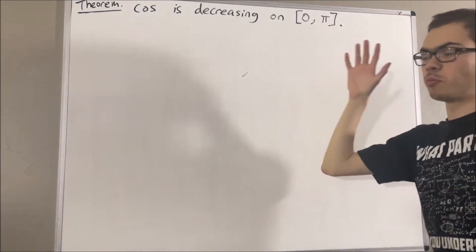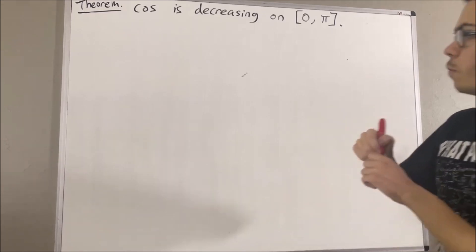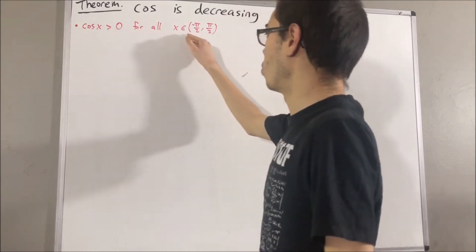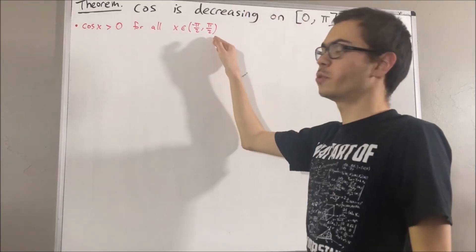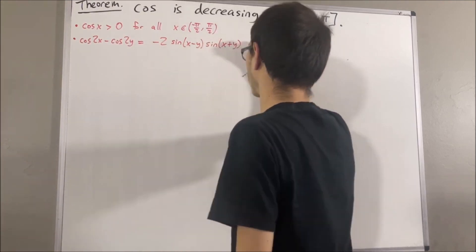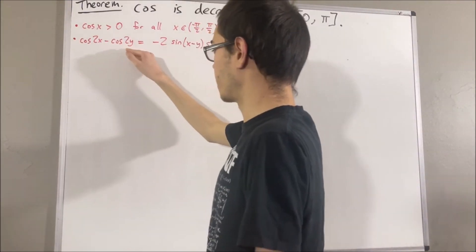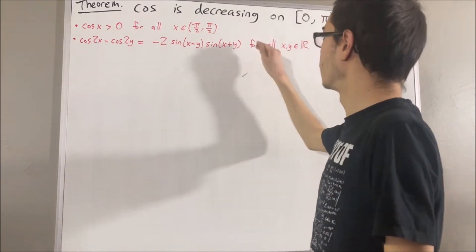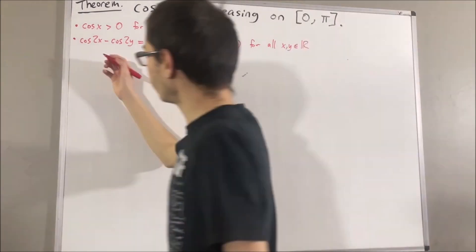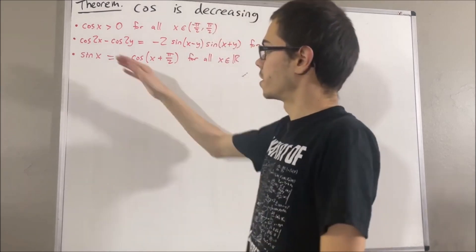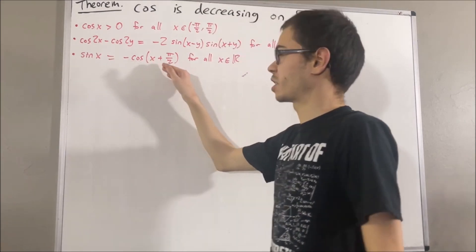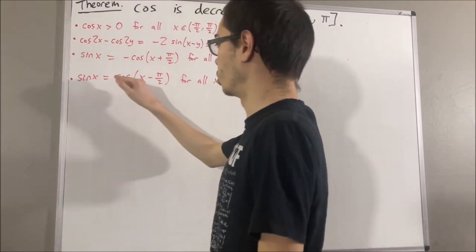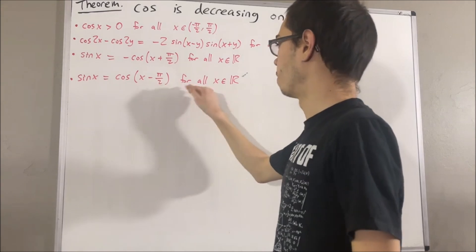In proving this theorem, we are going to use some preliminary results. First: cosine of x is greater than 0 for all x in the open interval negative pi over 2 to pi over 2. Second: cosine of 2x minus cosine of 2y equals negative 2 sine of (x minus y) times sine of (x plus y), for all real x and y. Third: sine of x equals negative cosine of (x plus pi over 2) for all real x. And finally: sine of x equals cosine of (x minus pi over 2) for all real x.